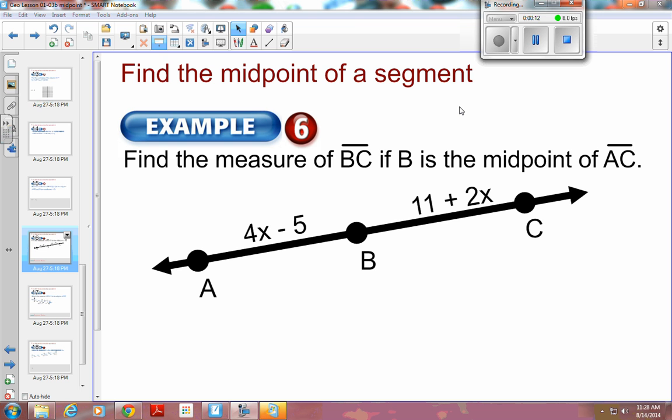Find the measure of BC if B is the midpoint of AC. If B is the midpoint of AC, you know that AB and BC are the same distance because of the definition of midpoint.